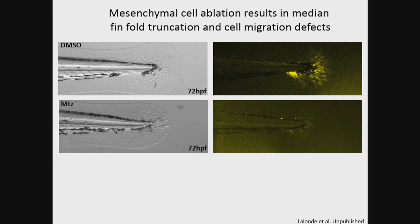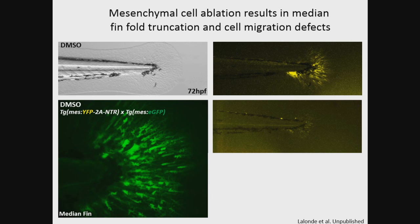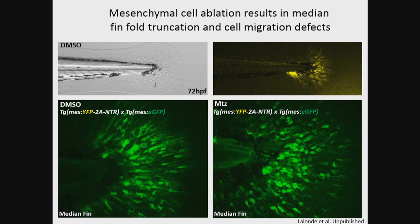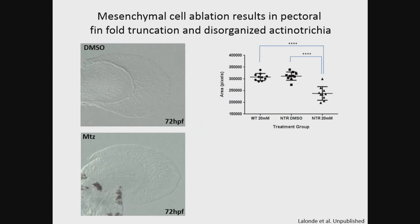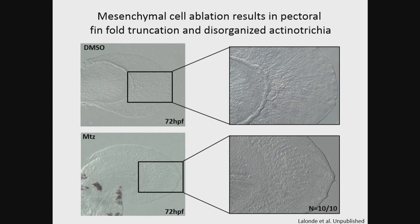To examine cell morphology more closely, I crossed our line with a simple GFP reporter line for mesenchymal cells. In DMSO-treated controls, cells are migrating nicely through the fin in an elongated branching shape. However, in metronidazole-treated fish, there is basically a cluster of rounded, dying cells close to the trunk, and cells that are migrating have branching defects. Ablation efficiency does decrease when we out-cross our YFP-NTR fish. In the pectoral fin, we also see reduction in fin-fold size in metronidazole-treated fish compared to controls, summarized in a graph. Looking more closely at the fin fold and actinotrichia structure: in DMSO-treated controls we have nice straight actinotrichia as the fin fold forms, but in metronidazole-treated fish the actinotrichia are not supporting the fin fold and are completely curved—we see that in all of our fish.